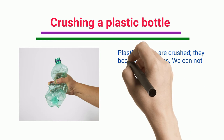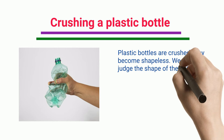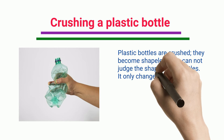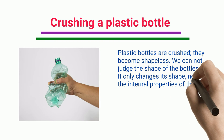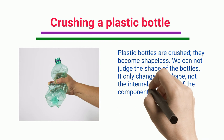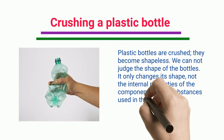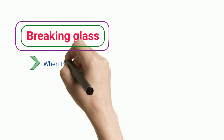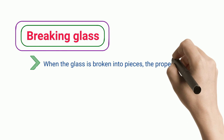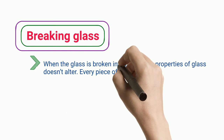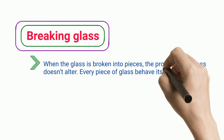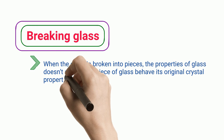Crushing a plastic bottle: plastic bottles are crushed and become shapeless. It only changes the shape, not the internal properties of the substances used in the bottle. Breaking glass: when the glass is broken into pieces, the properties of glass do not alter — every piece retains its original crystal properties.